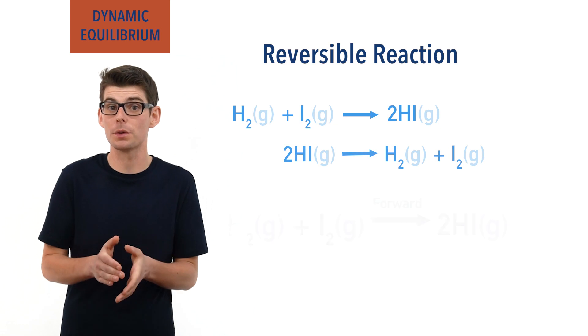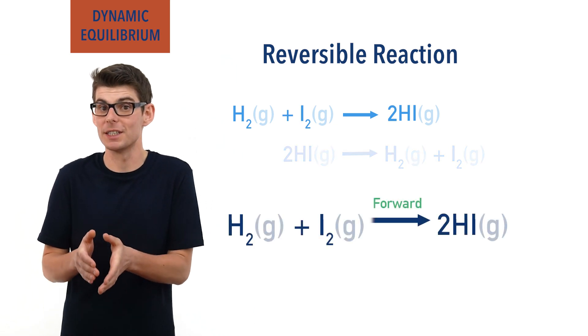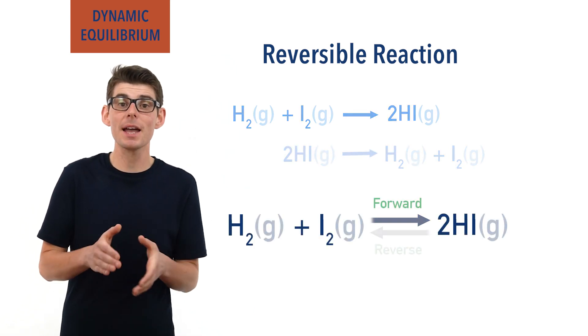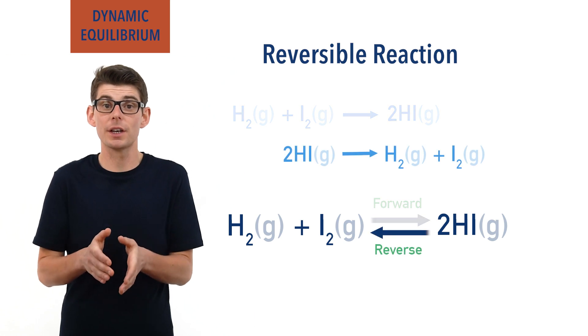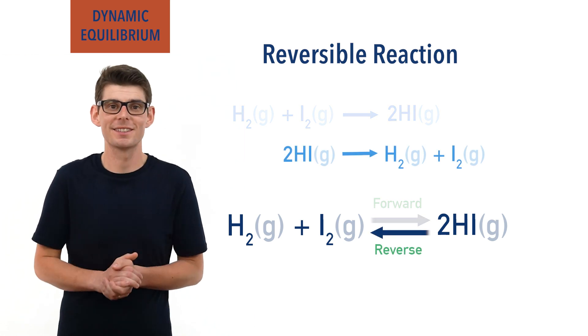There is a forward reaction — hydrogen and iodine reacting together — and a backwards reaction — hydrogen iodide forming hydrogen and iodine.